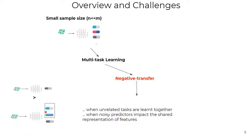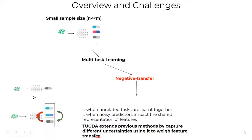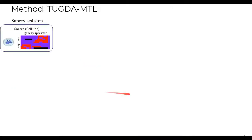TUGDA allows a predictor for the reliable tasks to have a high contribution to the feature learning, while alleviating the influences of noisy predictors. In addition, TUGDA extends previous methods by capturing different uncertainties, using it to weigh the feature transfer.